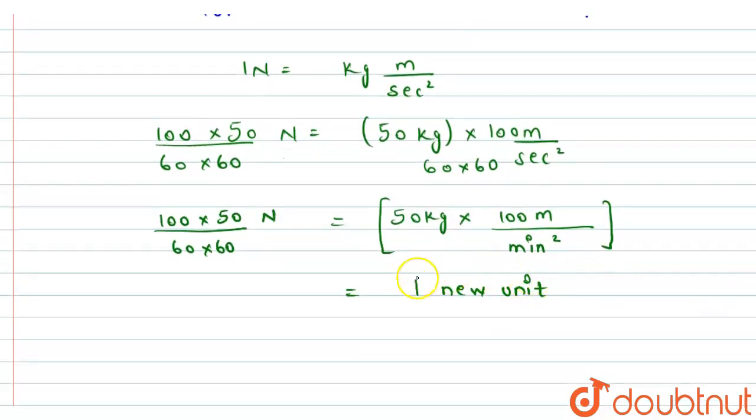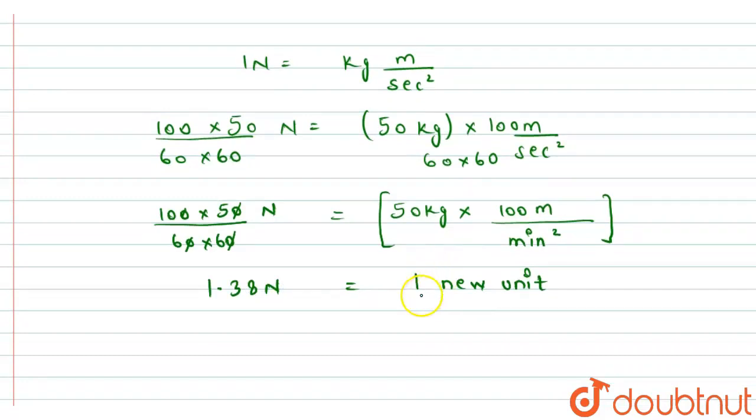And now, this one unit, one new unit has, we can cancel out here from 0, and this 0, so we will be left with, after solving this, 1.38 Newtons. That means, that this one new unit contains 1.38 Newtons. So one newton will contain, how much, 1 over 1.38 New unit.